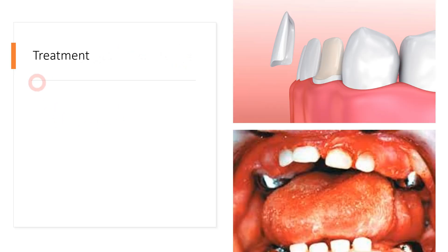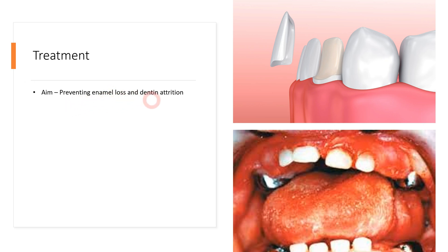Talking about treatment: the aim should be preventing further enamel loss and dentine attrition so that a normal or near-normal crown height can be maintained and the patient can perform normal speech and masticatory function. That is the primary goal — to prevent further loss of enamel and dentine.